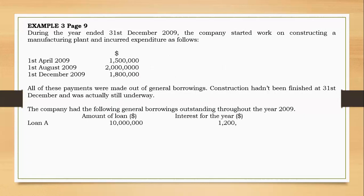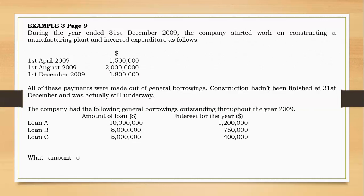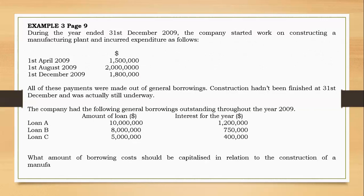For further information, the company had the following general borrowings outstanding throughout the year 2009. Loan A was $10 million with interest of $1.2 million. Loan B: $8 million with interest of $750,000. And Loan C: $5 million with interest of $400,000. The question now is: what amount of borrowing costs should be capitalized in relation to the construction of the manufacturing plant during the year?